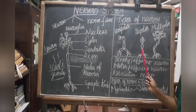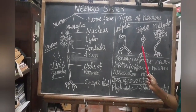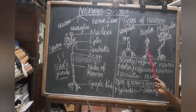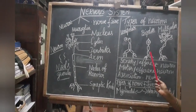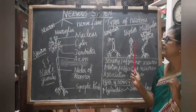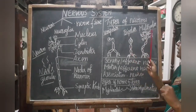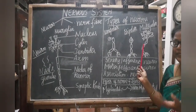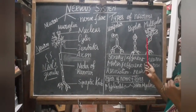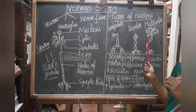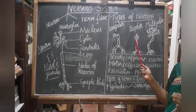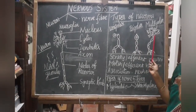Bipolar neurons have two processes — one axon and one dendron — and are present in the retina of the eye. Multipolar neurons have many axons and dendrons and are present in the cerebral cortex of the brain.